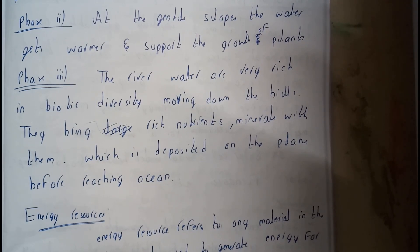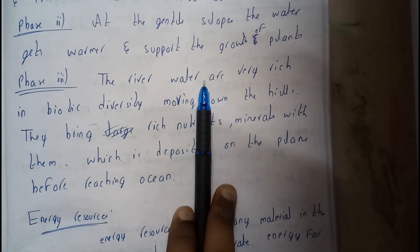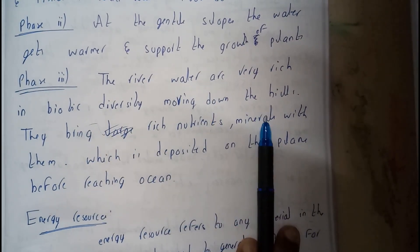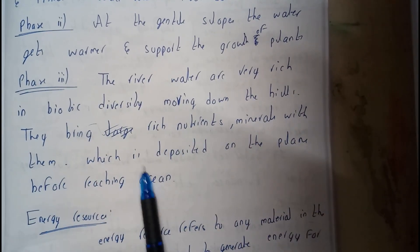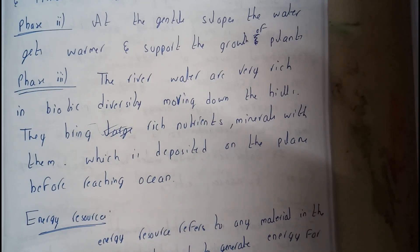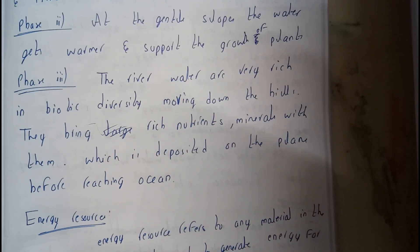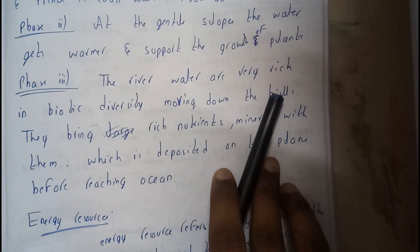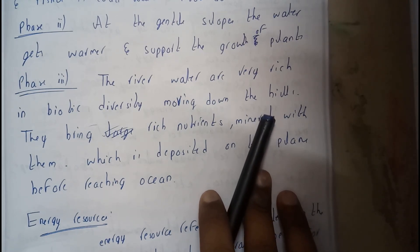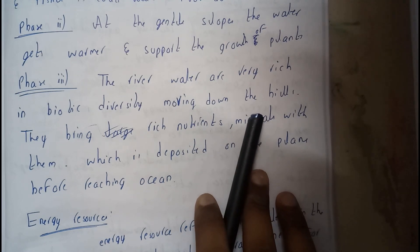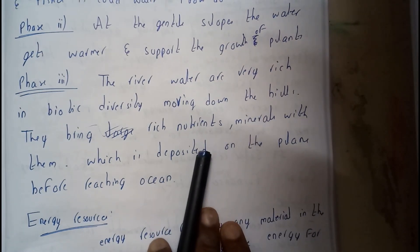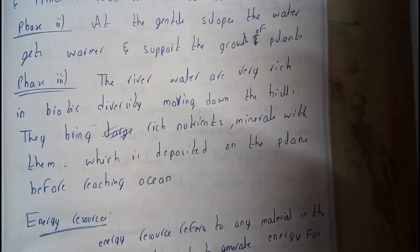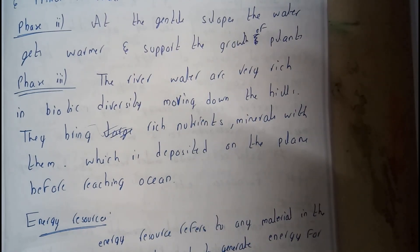Phase three: the river water is very rich in biotic diversity. Moving down the hills, rivers bring rich nutrients and minerals with them, which are deposited on the plains before reaching the oceans. Every river ends up travelling to the ocean, and at the end of the third phase they collect all the rich biotic materials from everywhere, leaving rich nutrients on the plains before mixing with the ocean. In the next tutorial, let's see about different types of energy resources.